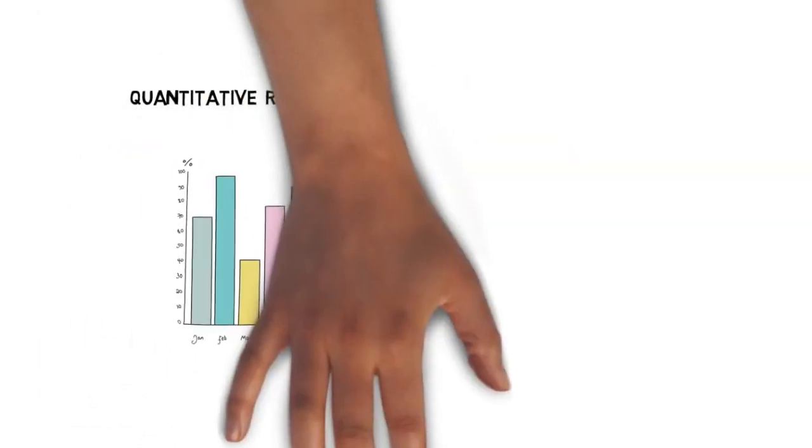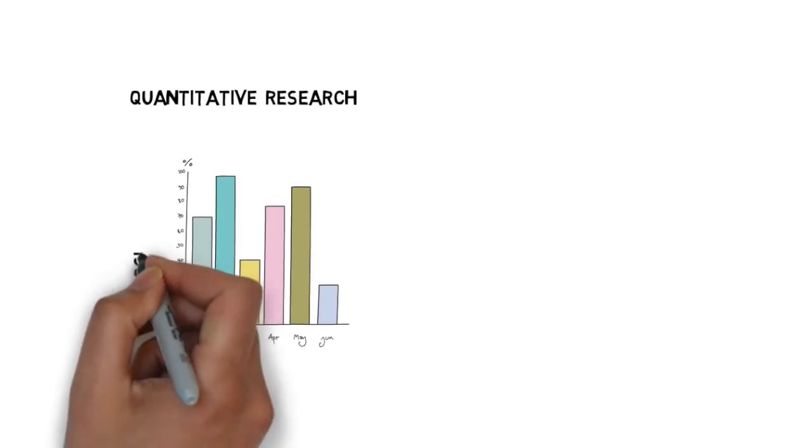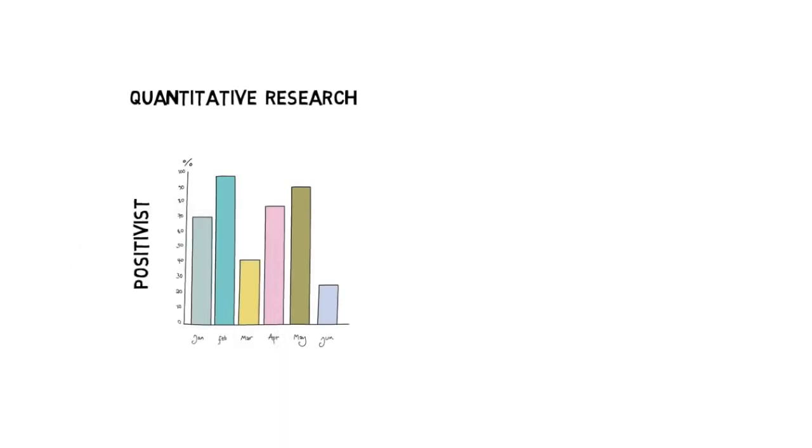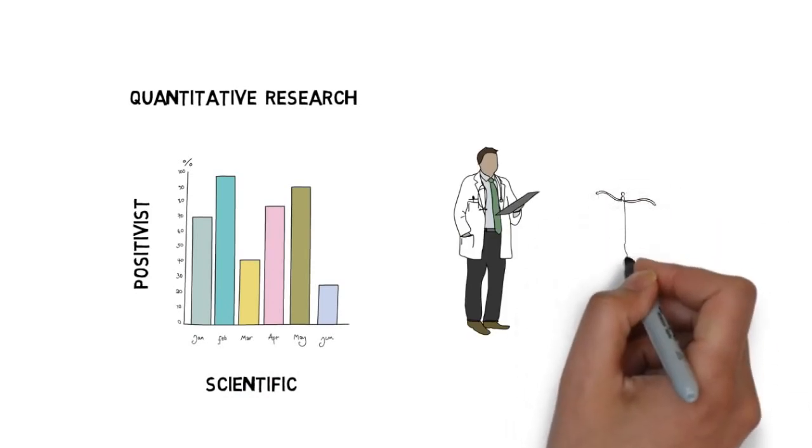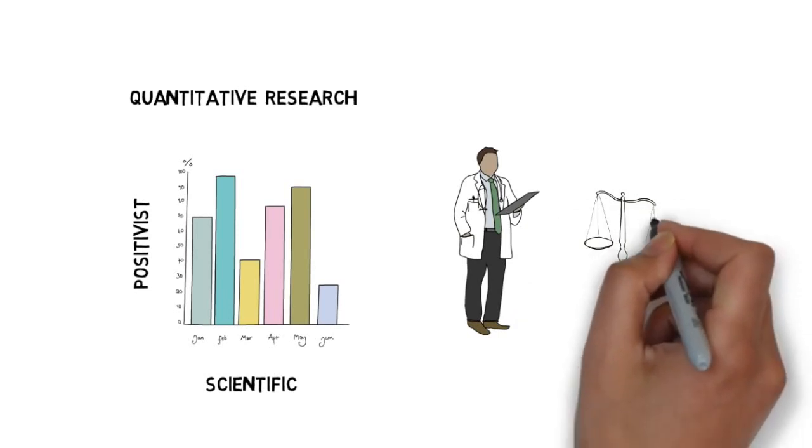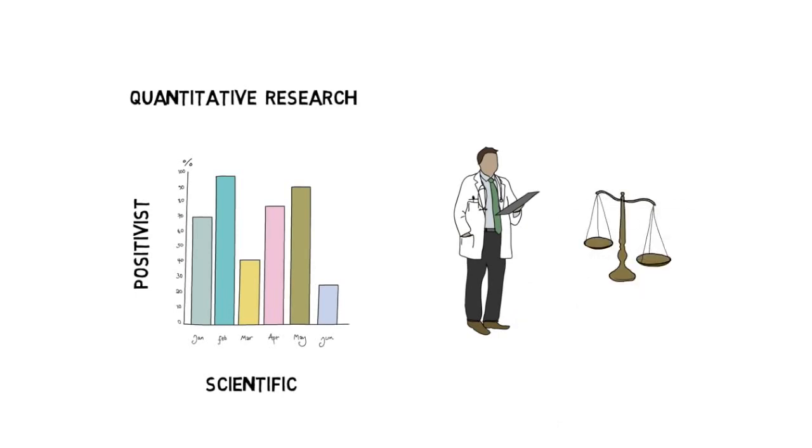Quantitative research follows a positivist research philosophy, which is based on a scientific approach to research. The researcher would observe objectively in an attempt to either prove or disprove their hypothesis. This is made possible through the collection of data that can be measured.